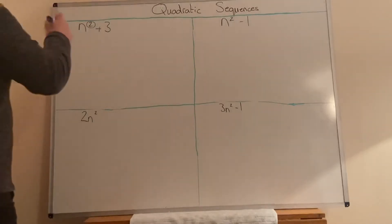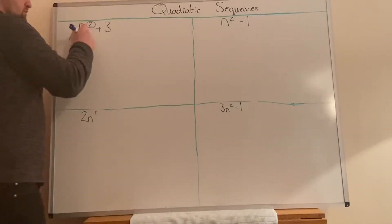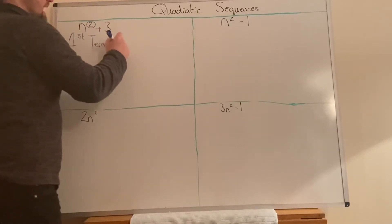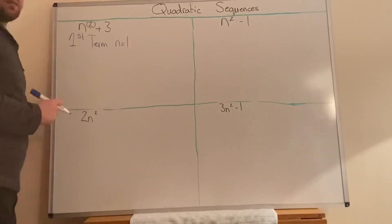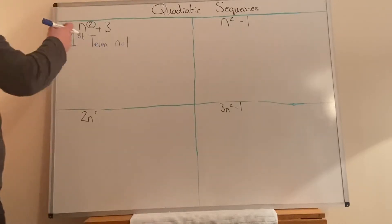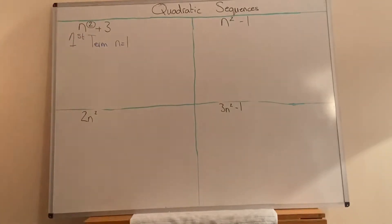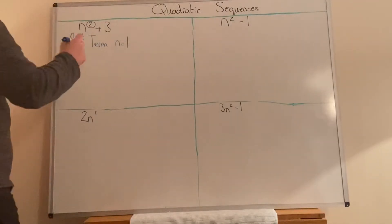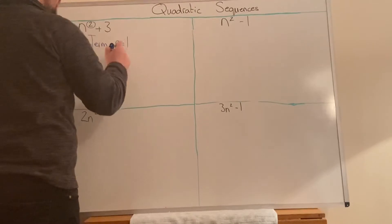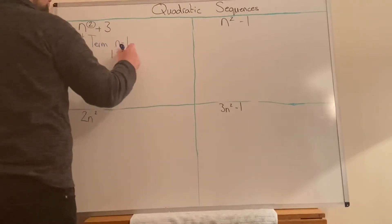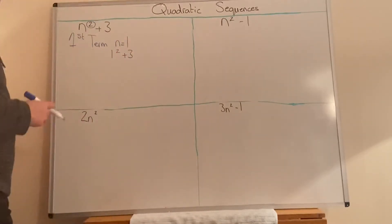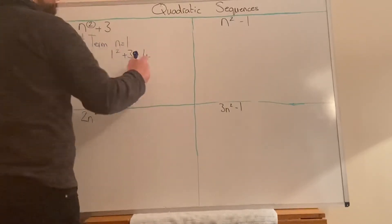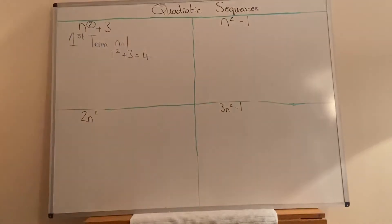To get the first term of a sequence, n equals 1. So, what that means is, wherever you see an n, we're going to take that out and we're going to put 1 in. So what we end up with is 1 squared plus 3. 1 squared is 1, plus 3 is 4.